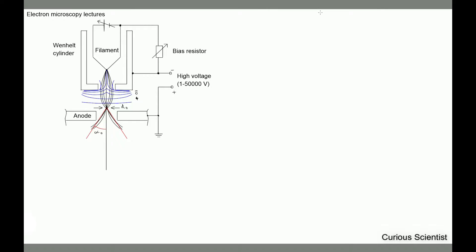The electrons are obtained from the source, which is the filament, by thermionic emission. Thermionic emission is basically that at high temperatures, electrons become sufficiently energetic to overcome the work function of the cathode or filament material, and escape it.